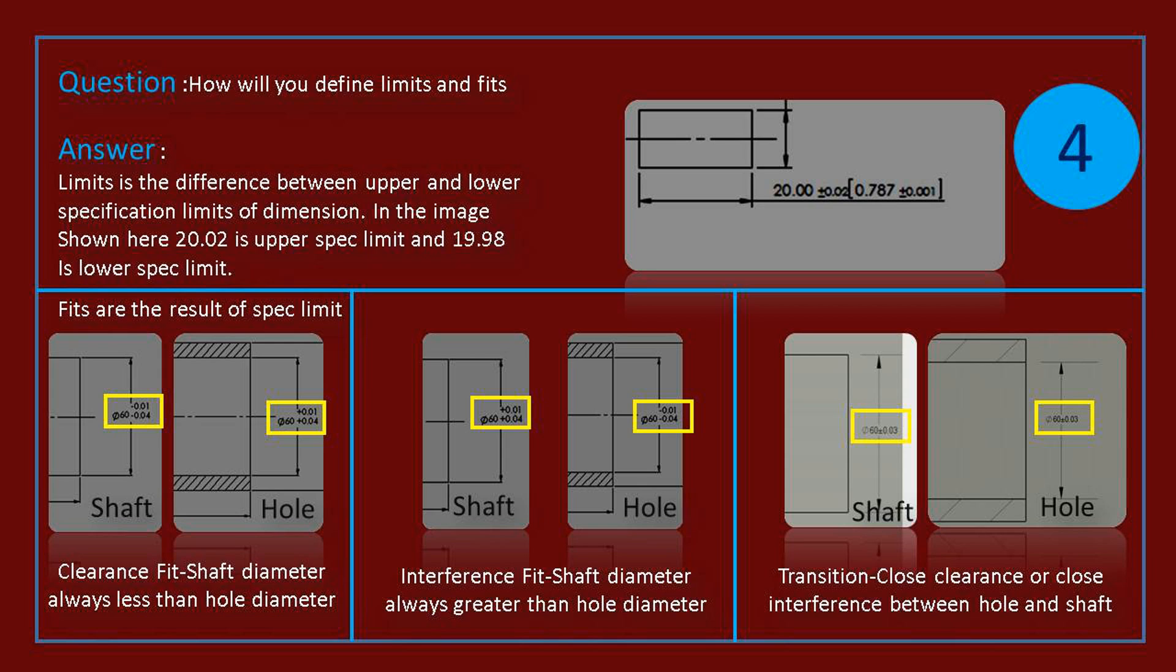Clearance fit: shaft diameter always less than hole diameter. Interference fit: shaft diameter always greater than hole diameter. Transition: close clearance or close interference between hole and shaft.